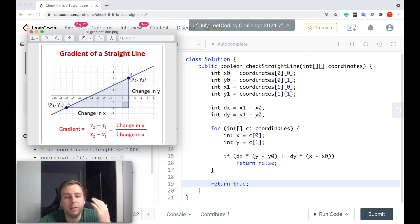We have the initial change in x and change in y for the first two points from our coordinates. Then we can iterate through all of the points and compare the gradient for the first two points with the gradient for all the next points which we will have in our input array.